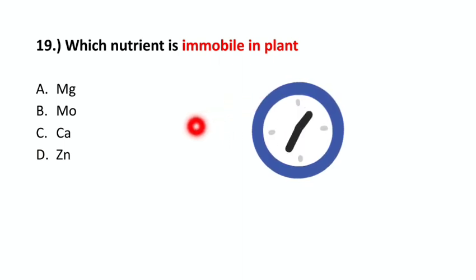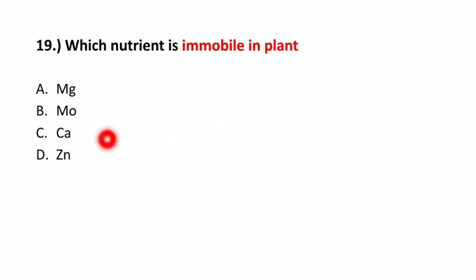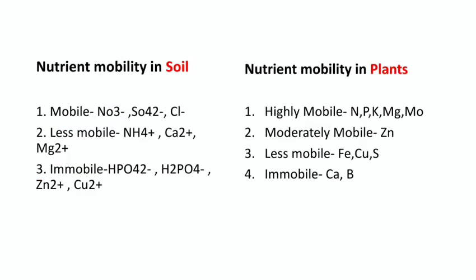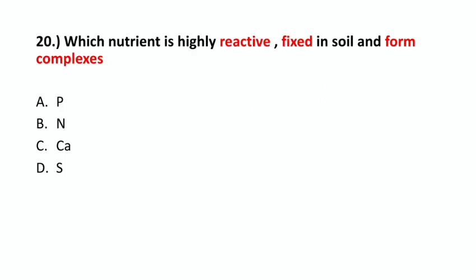The correct option is option C – Calcium. This falls under the category of nutrient mobility in soil and nutrient mobility in plants. Question number 20: Which nutrient is highly reactive, gets fixed in soil, and forms complexes?